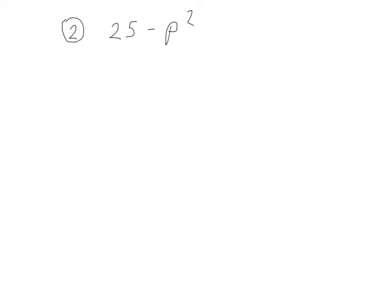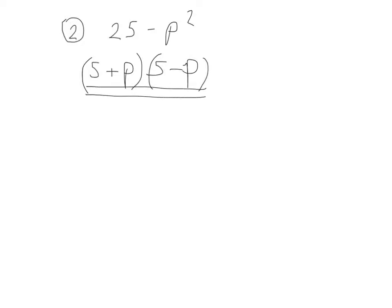Again, we look for a highest common factor first of all. There's not one to be found, so it's straight to a difference of two squares — bracket with a plus and bracket with a minus. The square root of 25 is 5, and the square root of p squared is p. So the answer is 5 plus p, 5 minus p. And that's the final answer.